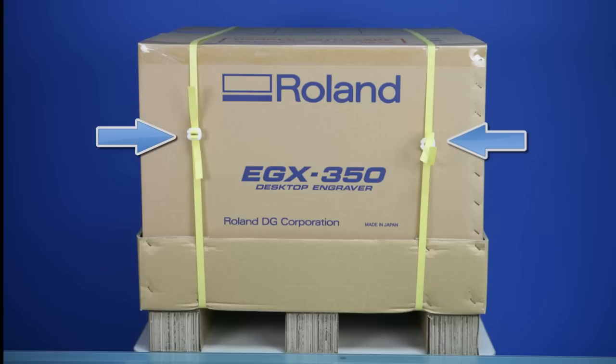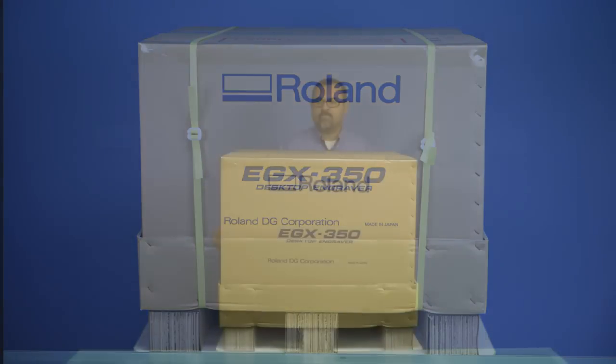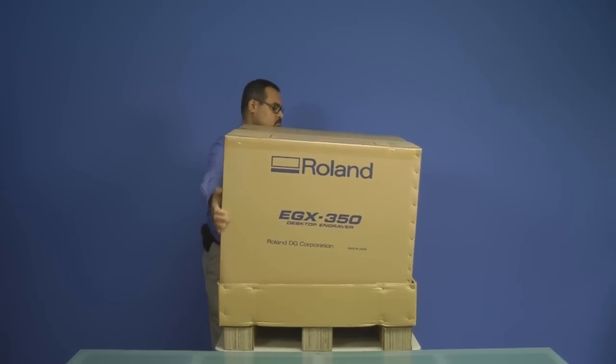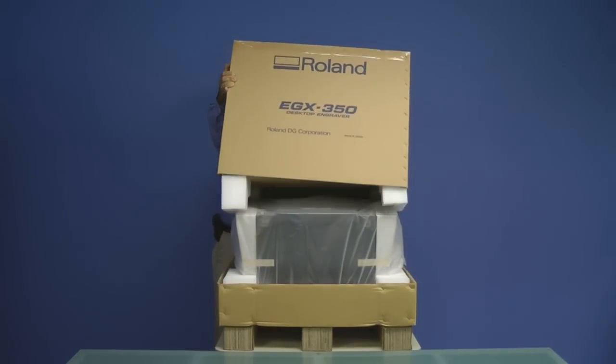To unpack the machine, remove the two yellow packing straps that you see here. Next, pull the top cover off of the machine and set it to the side.